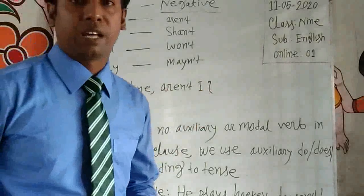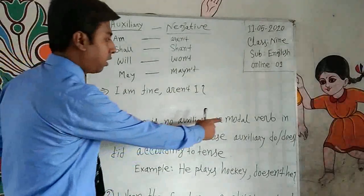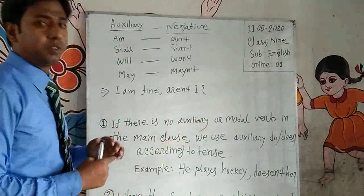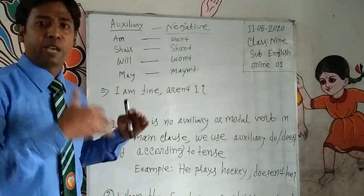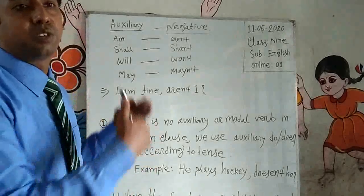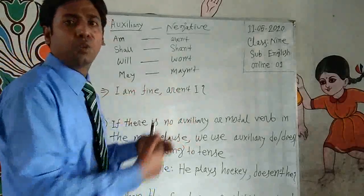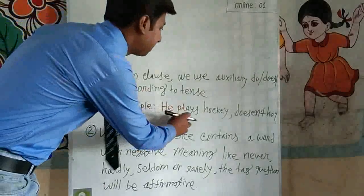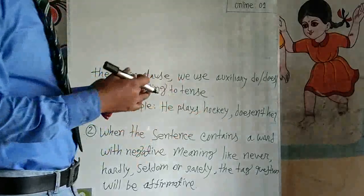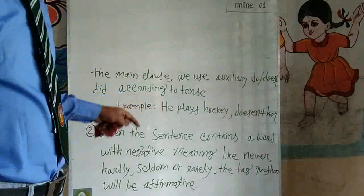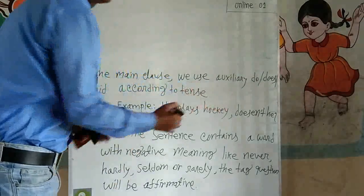There are some basic rules for tag questions. Rule one: if there is no auxiliary or modal verb in the main clause, we use do, does, or did according to tense. If the statement is present tense, we use 'do' or 'does'; if past tense, we use 'did'. For example: 'He plays hockey.' This is present tense with no auxiliary verb, so we use 'does' and the pronoun 'he'. The sentence is affirmative, so we use a negative tag: 'Doesn't he?'